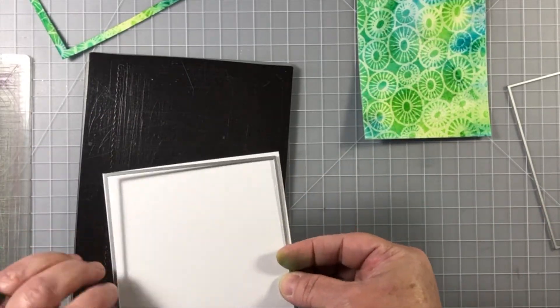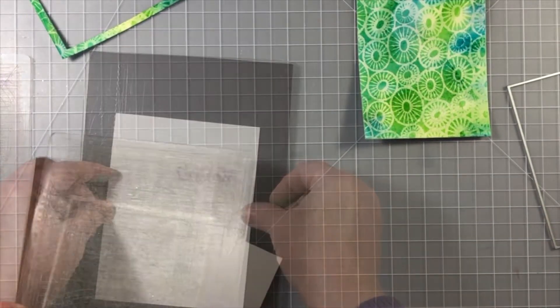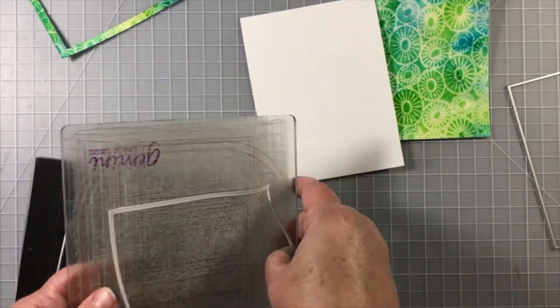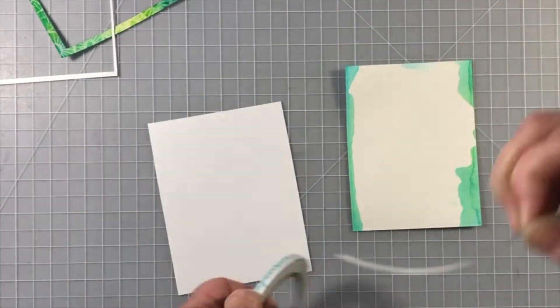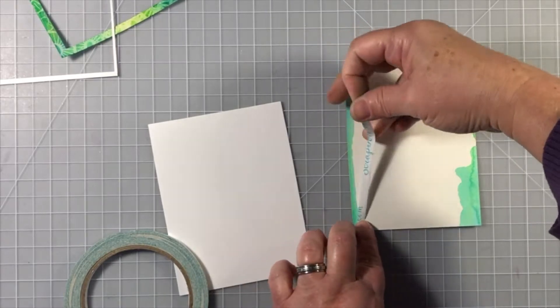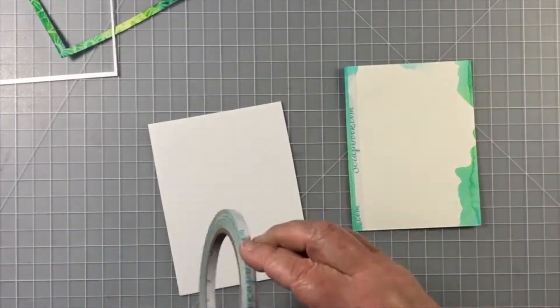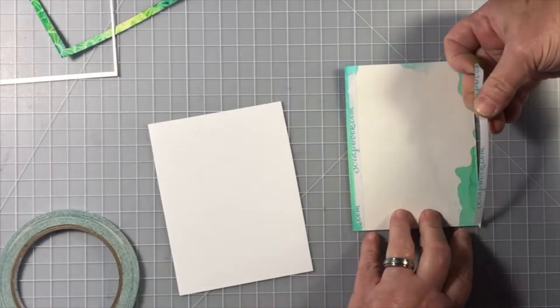Now I'm going to use two rectangle dies, one larger than the other, and I'm going to make a white mat for the watercolor panel to sit on. This is going to serve two purposes.